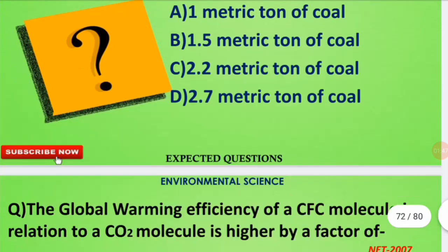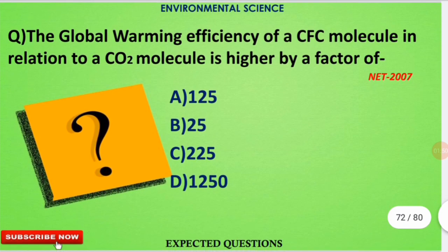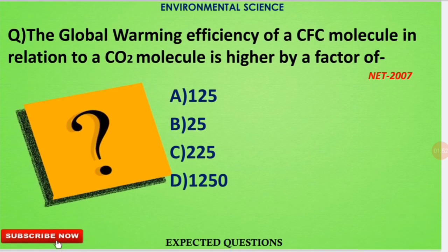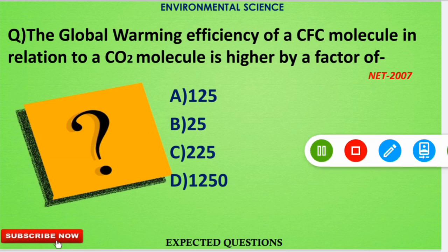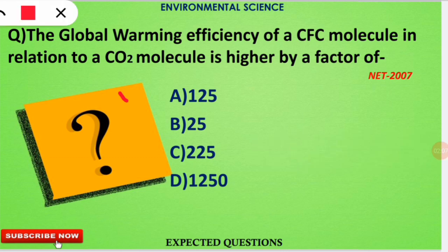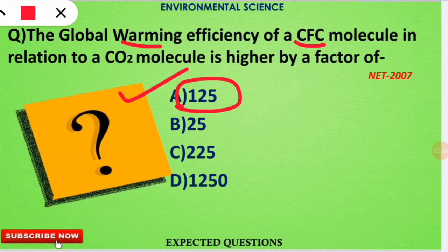The next question is: the global warming efficiency of a CFC molecule in relation to a carbon dioxide molecule is higher by a factor of what? The correct option is option A. The global warming potential of a CFC molecule is 125 times the global warming potential of a carbon dioxide molecule.